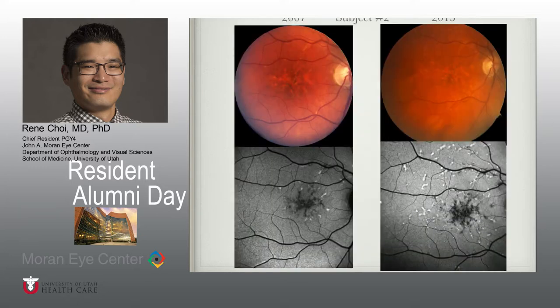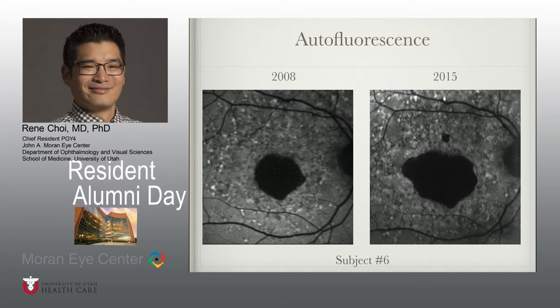We were able to track progressive worsening of the disease using multimodal imaging. The fundus autofluorescence images highlight the increase in the number of flecks and progressive enlargement of the area of macular atrophy over time. Here is another fundus autofluorescence image showing progressive enlargement of the area of macular atrophy as well.